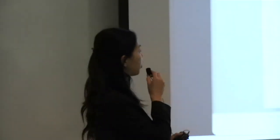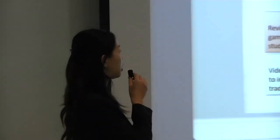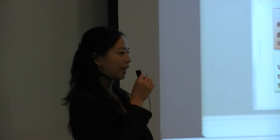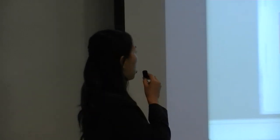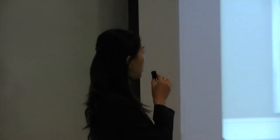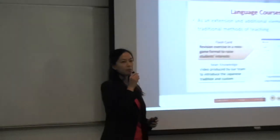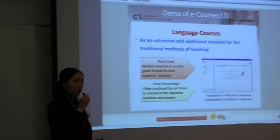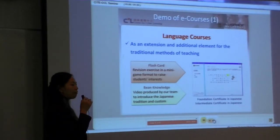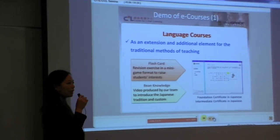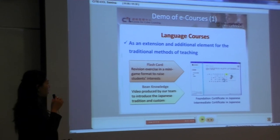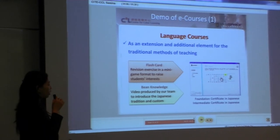The first one is about a language course — this is a Japanese e-course. It is an extension, an additional element for the traditional method of learning. In this e-course, we will focus on some special features like a flashcard and also 'being knowledge'. Let's go into the e-course to see the details.